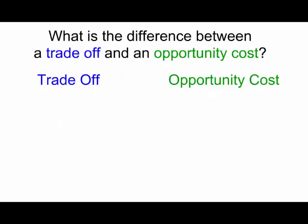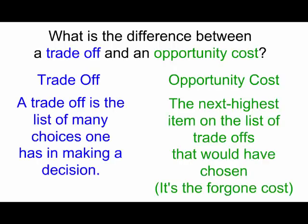To review: what's the difference between a trade-off and an opportunity cost? A trade-off is the list of many choices one has in making a decision. An opportunity cost is the next highest valued item on the list of trade-offs that would have been chosen — it's the foregone cost.